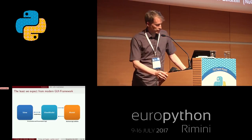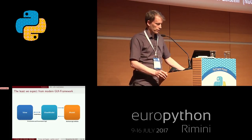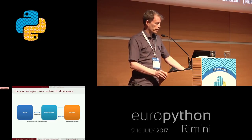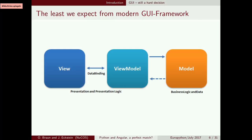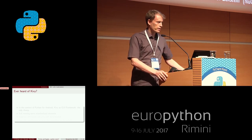This is what we would expect from a modern GUI framework. It's the well-known three-part architecture: you have the View and the ViewModel which are connected by data binding. Every time you change the ViewModel the View should be updated, and every time the View sends an event the ViewModel has to be notified. The Model on the right-hand side is loosely coupled to this setup and contains the business logic.